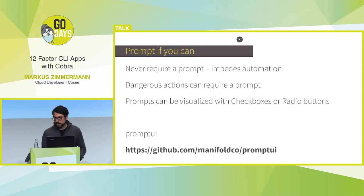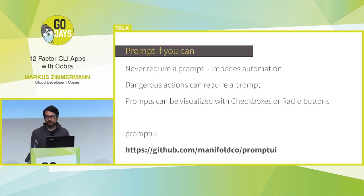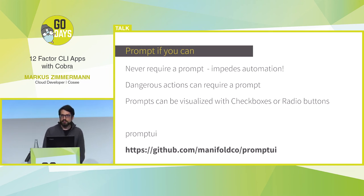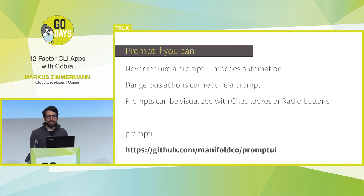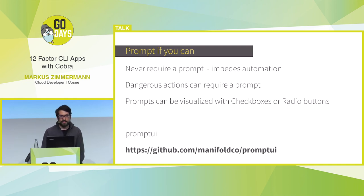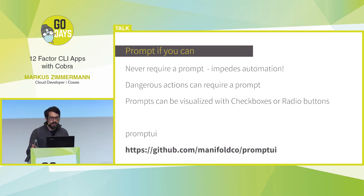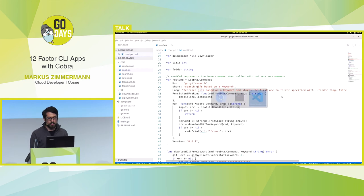Another thing that needs some discussion is prompting. I think you should never require a prompt, because it can impede automation when used in a continuous integration pipeline. But some actions might be so dangerous — like deleting something — that they require a prompt. However, you should always provide some override flag to ignore the prompt so it can be automated. Unfortunately Cobra doesn't have anything integrated for prompting, so that's why I use Prompt UI.